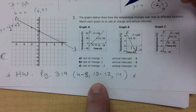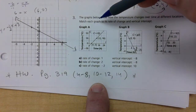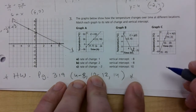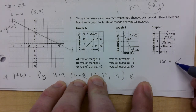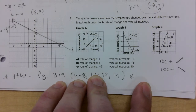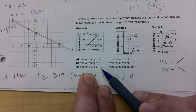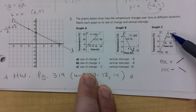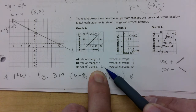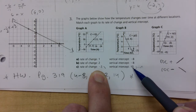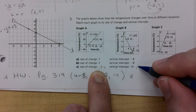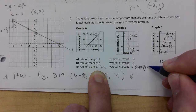The graphs below show how temperature changes over time at different locations — match each graph to its rate of change and vertical intercept. If the rate of change is positive, the line goes up from left to right; if it's negative, it goes down. So we can narrow it down: this graph goes down, and the vertical intercept — the y-intercept — is at 10. So graph B belongs to C here.